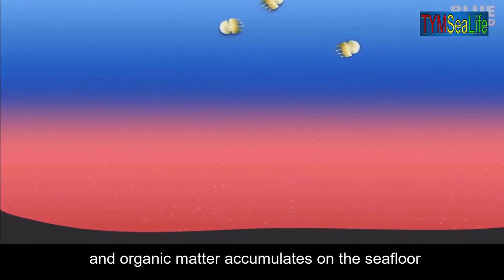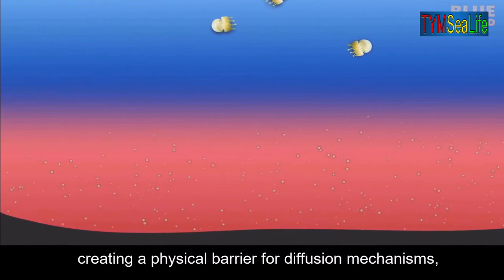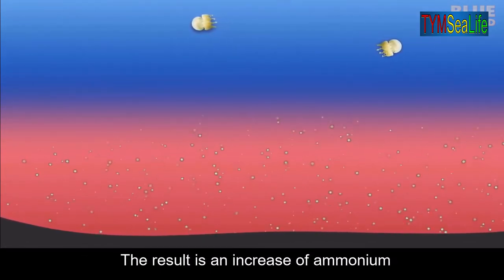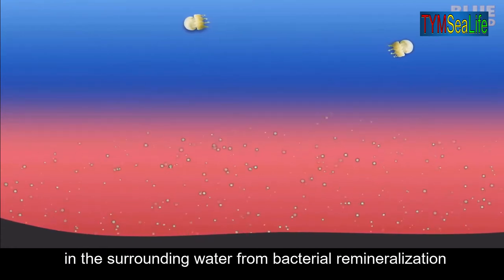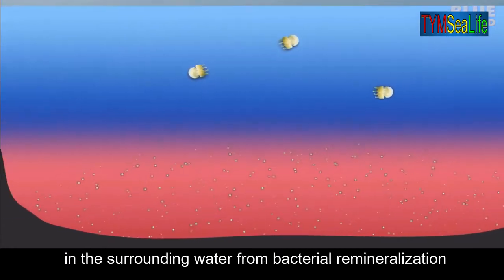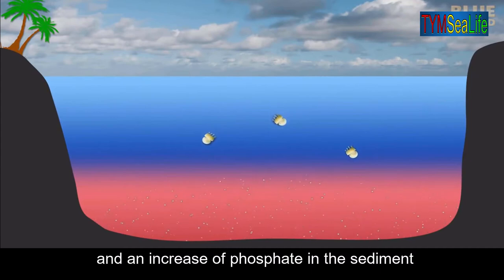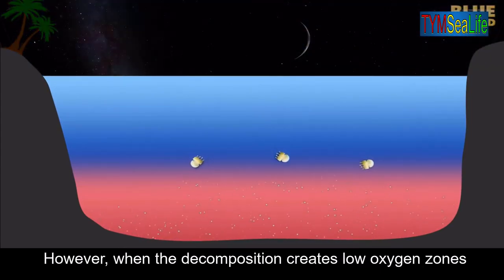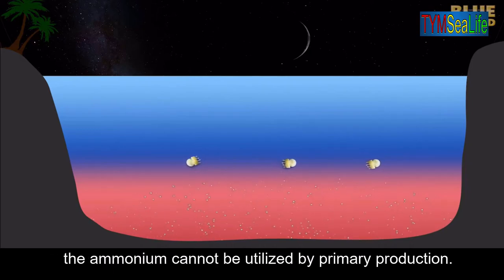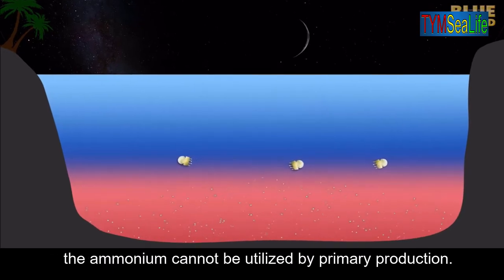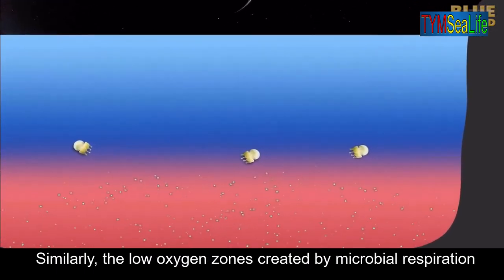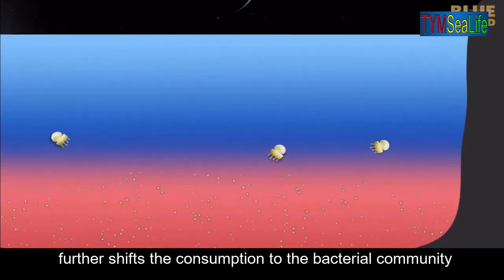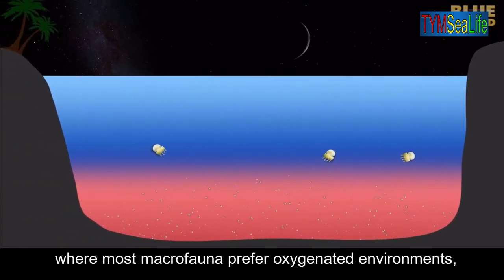In some cases, the jelly falls are too large for consumption and organic matter accumulates on the seafloor, creating a physical barrier for diffusion mechanisms and reducing oxygen transport into sediments. The result is an increase of ammonium in the surrounding water from bacterial remineralization and an increase of phosphate in the sediment from low-oxygen redox reactions. When decomposition creates low-oxygen zones, the ammonium cannot be utilized by primary production, and microbial respiration further shifts consumption to the bacterial community, limiting energy transfer to higher trophic levels.